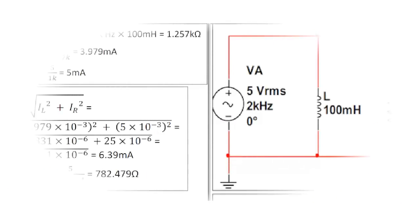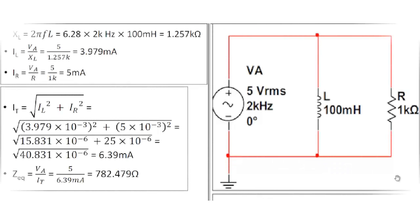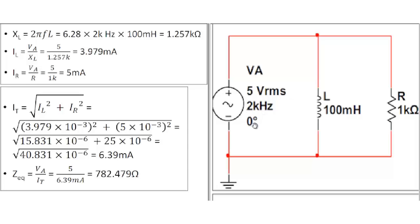This is an explanation of a parallel inductor-resistor circuit. On the right-hand side we have the circuit: a 100 mH inductor in parallel with a 1k ohm resistor, in parallel with a voltage source of 5 volts RMS with a frequency of 2 kHz and a zero degree phase.